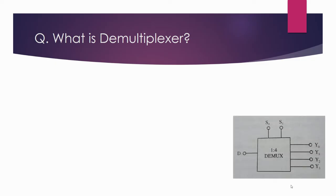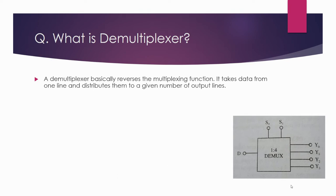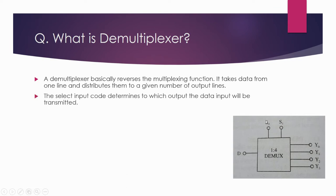Here is the block diagram of demultiplexer. Demultiplexers are exactly opposite, or we can say the reverse functionality of the multiplexer. In the demultiplexer, we get input from a single line and the output is provided to multiple lines depending upon the select lines s1 and s0.